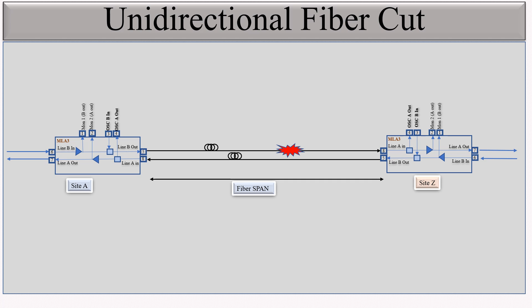So suppose this fiber is cut. What happens? We will get OSA loss of frame — this amplifier detects OSA loss of frame and OSA loss of power, because if this fiber is cut then the OSA power is also not transmitted, so we get OSA loss of power on port number 4. There will also be total amplifier loss of power because no signal is being received on this port. When these three conditions are met, it will show the optical line fail alarm. You can see the optical line fail alarm appears on port number 8 of this amplifier.